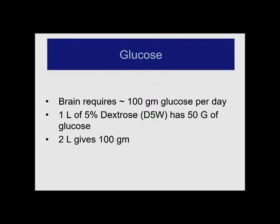Now let us switch to sugar. Your brain needs about 100 grams of glucose a day. A liter of dextrose — D5W — has 50 grams per liter, so two liters gives you 100 grams. With that 100 grams you can reduce protein breakdown by about 60 to 65%, though that still leaves 35% that you need to address through other types of feeding and protein. But that is a pretty big reduction if you can give it to your patient.